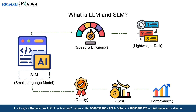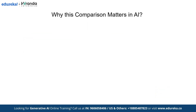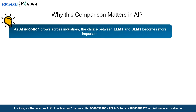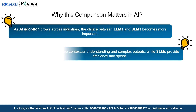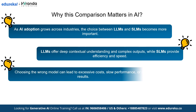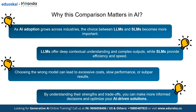Now that we have a good idea of what LLMs and SLMs are, let's talk about why this comparison is so important. As AI adoption grows across industries, the choice between LLMs and SLMs becomes more critical. LLMs offer deep contextual understanding and complex outputs, while SLMs provide efficiency and speed. Choosing the wrong model can lead to excessive cost, slow performance, or subpar results. By understanding their strengths and trade-offs, you can make more informed decisions and optimize your AI-driven solutions.